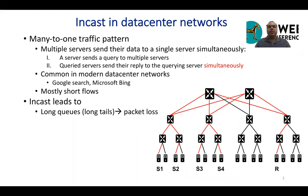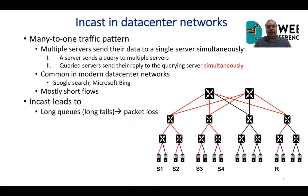In the next step, the queried servers send their replies to the querying server simultaneously — those are S1, S2, S3, and S4. You can see the data path of all these servers to the receiver, and you can see the problem here. At the last hop switch connected to the receiver, the buffer will overflow because the aggregated rate of traffic going through to the receiver is much higher than the link connecting the server from the last hop leaf switch. This phenomenon is pretty common in modern data center networks like Google Search and Microsoft Bing, and in-cast-related packets are very short flows.